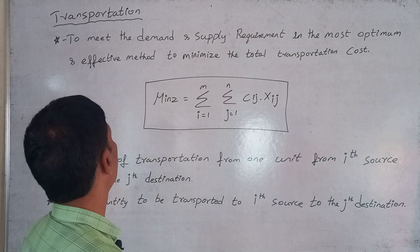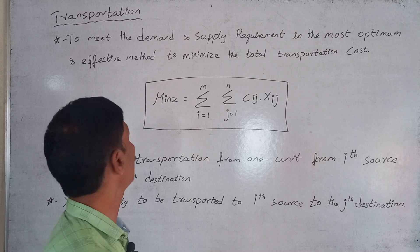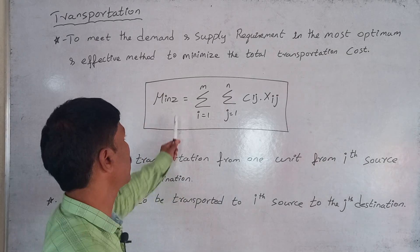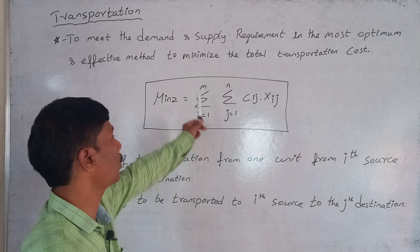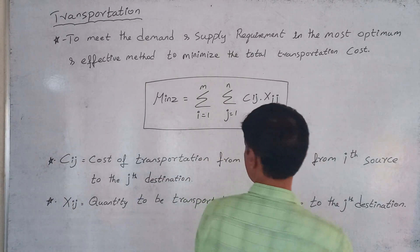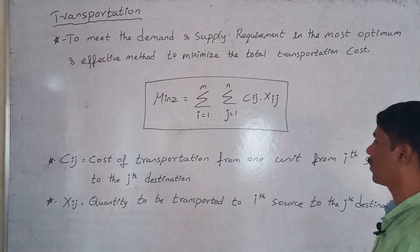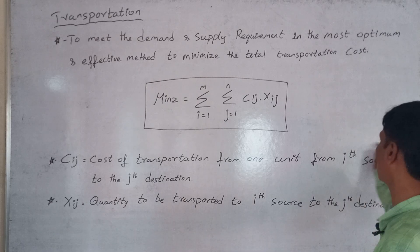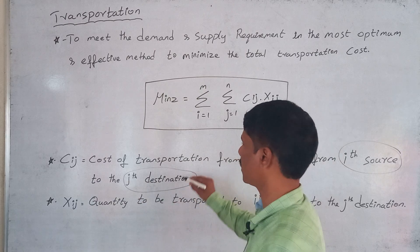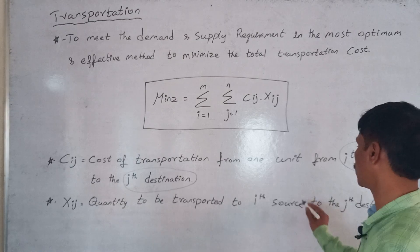We are solving the transportation problem using a modified form of the simplex method to meet demand and supply requirements. The objective is to minimize total transportation cost Z, which equals the summation over i=1 to m and j=1 to n of cij times xij, where cij is the cost of transporting one unit from the i-th source to the j-th destination, and xij is the quantity transported.